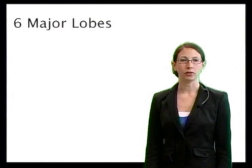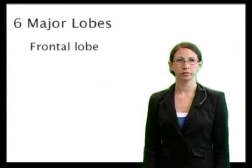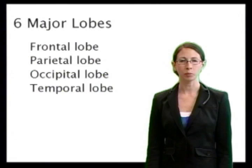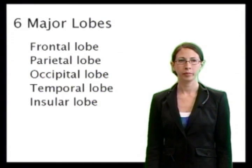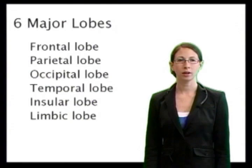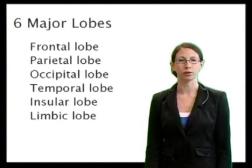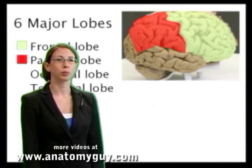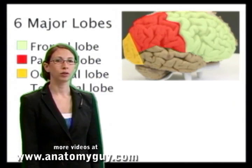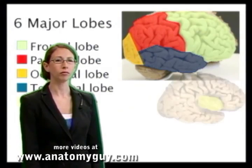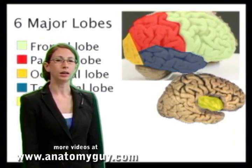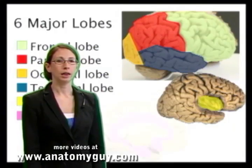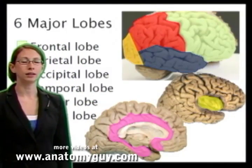The six major lobes we will be identifying today are the frontal lobe, the parietal lobe, the occipital lobe, the temporal lobe, the insular lobe, and the limbic lobe, which is not truly an anatomical lobe but more of a functional lobe. Here in green we can see the frontal lobe, posterior to that the parietal lobe in red, the occipital lobe in orange, and the temporal lobe in blue. In this view of the brain we can see the insular lobe in yellow with part of the frontal lobe and temporal lobe cut away. In this medial view of the brain we can see the limbic lobe in pink.